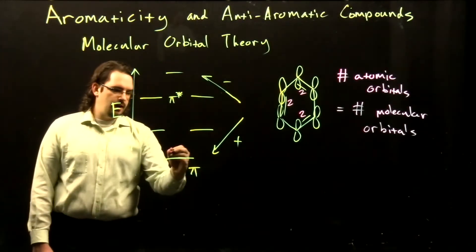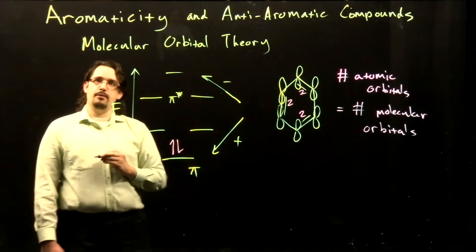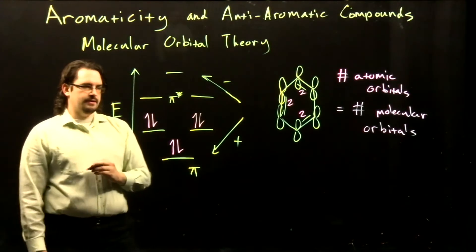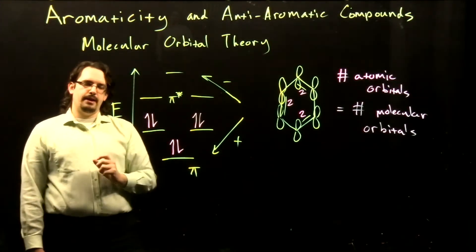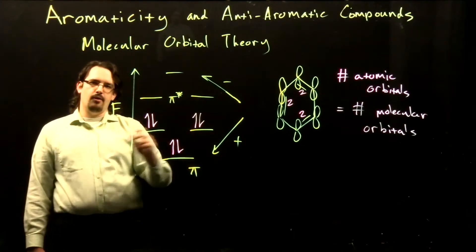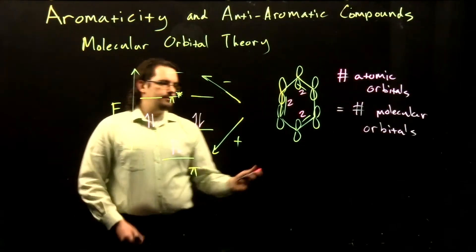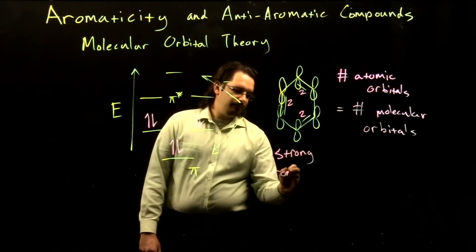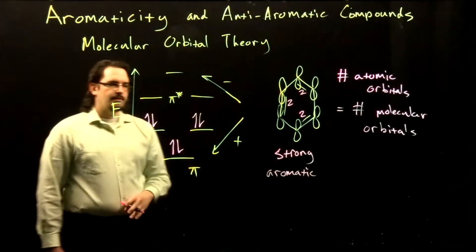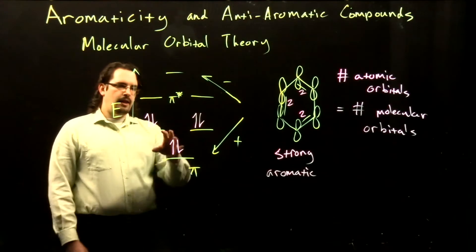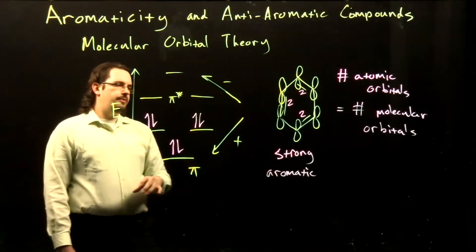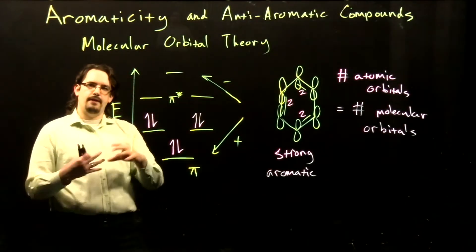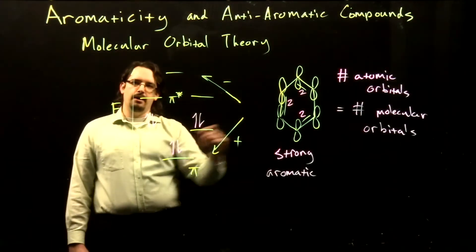Now if we're going to put our electrons in here to see what our bonding looks like for benzene, we need to count how many pi electrons we have. We would have two, two, and two from each of our double bonds — six total electrons. Starting with our lowest energy orbital: two electrons go here, two here, and two here. All of our electrons are in these lower energy bonding orbitals, and this contributes to our strong aromatic benzene structure. If we have any electrons in our antibonding orbitals, those will make our structure anti-aromatic.